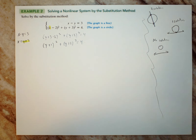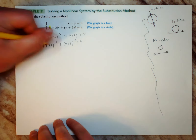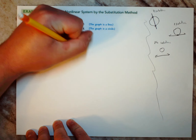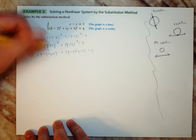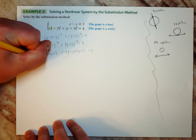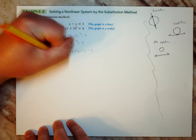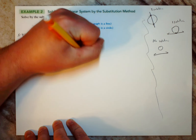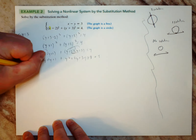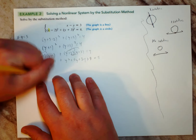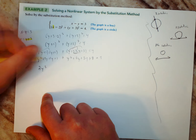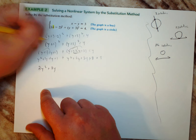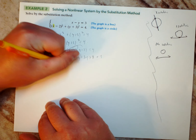Now expand: (y + 1)(y + 1) + (y + 3)(y + 3) = 4. Distributing gives y² + 2y + 1 + y² + 6y + 9 = 4. Combining like terms: 2y² + 8y + 10 = 4.